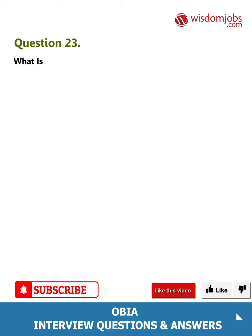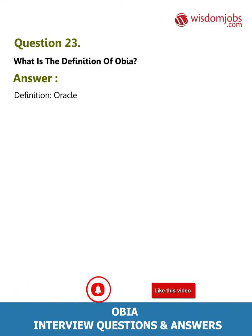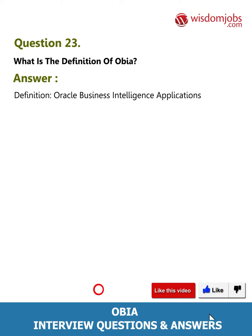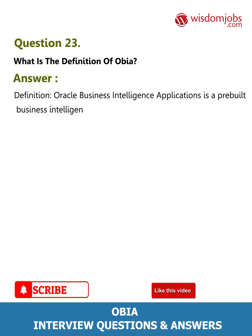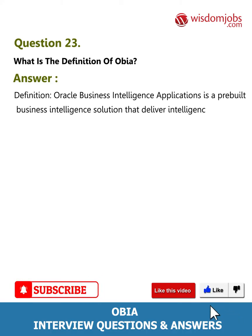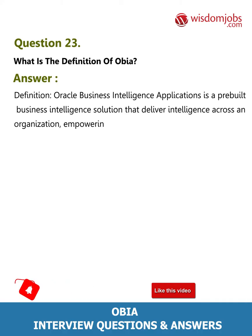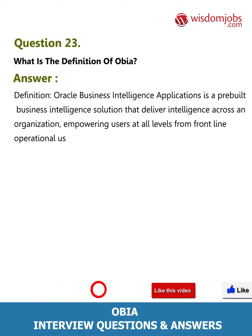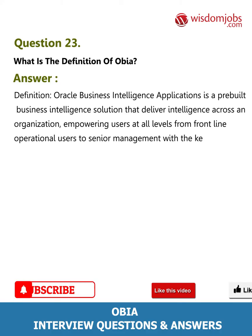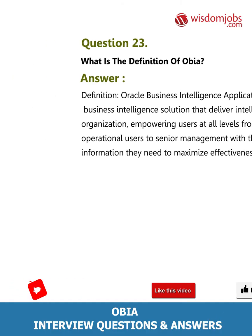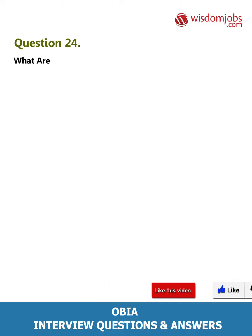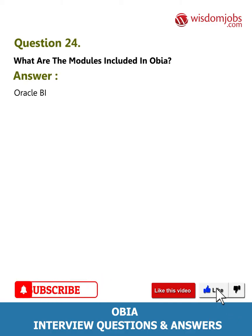Question 23: What is the definition of OBIA? Answer: Oracle Business Intelligence Applications (OBIA) is a pre-built business intelligence solution that delivers intelligence across an organization, empowering users at all levels — from frontline operational users to senior management — with the key information they need to maximize effectiveness.